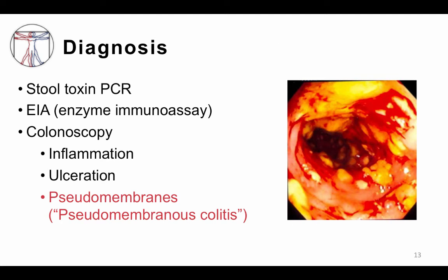How do we make the diagnosis of C. diff? Hospitalized patients with three or more loose stools a day and any suspicion for C. diff should be evaluated. The most common test is a PCR for stool toxin, which is rapid and has excellent sensitivity and specificity. Remember that initial culture results of C. diff on their own will not give us good information regarding whether a patient is harboring a toxin-producing strain or not. EIA is a less commonly performed assay. In challenging cases, such as trying to distinguish between C. diff and inflammatory bowel disease, colonoscopy may be performed. Findings on colonoscopy range from inflammation and ulceration to pseudomembranes, which are thought to be nearly pathognomonic for this disease. Pseudomembranes are whitish plaques that adhere to the colon and are formed by aggregates of inflammatory cells and proteins. Thus, the finding of pseudomembranous colitis is highly suggestive of C. diff. You can see pictures of these pseudomembranes from a patient's colonoscopy image on the right.